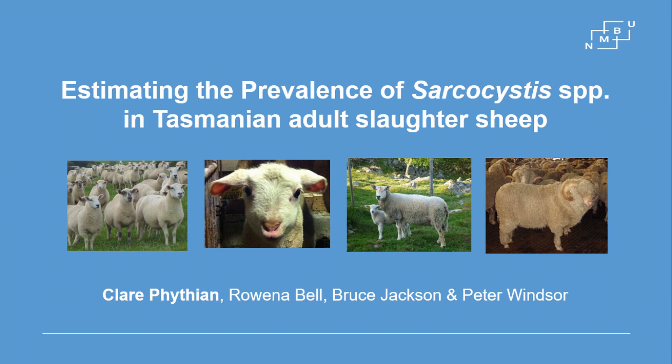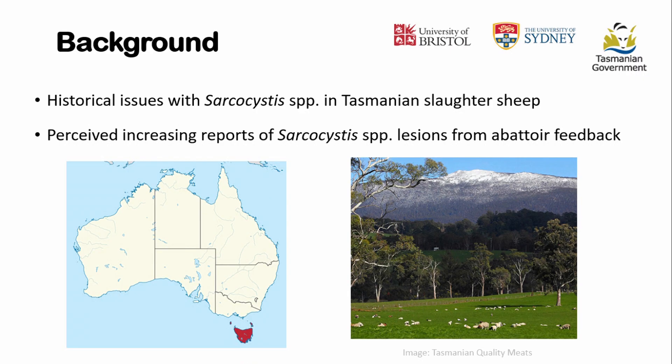I'm currently working at NMBU in southwest Norway. This presentation is regarding a cross-cultural mobility exchange with Australia. I had the fortune back in 2013 to visit the University of Sydney and had some discussions with the Tasmanian government. In Tasmania — a small island below Australia, shown in red on the graph — there have been historical problems with sarcocystis lesions in their slaughter sheep.